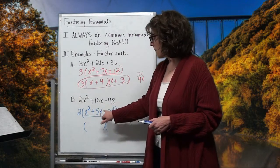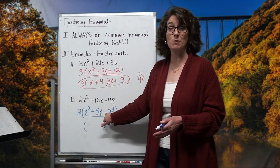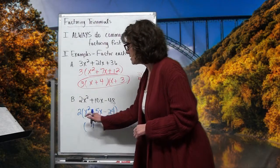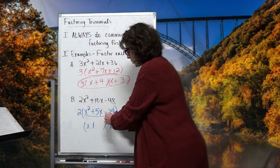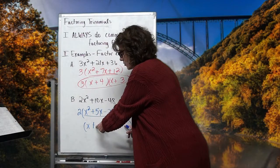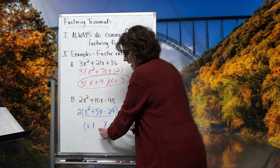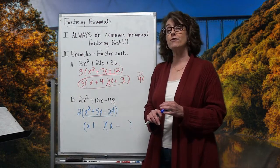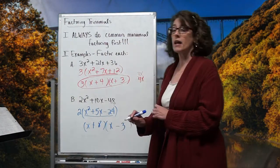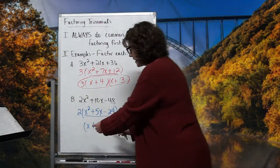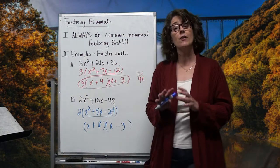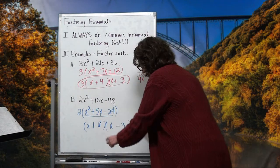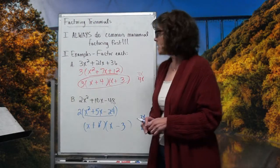I'm going to eliminate half my guesswork with the signs. The back sign is a minus, so my signs are going to be opposites — one plus, one minus. I split x squared into an x and an x in the front slots. I want two numbers that multiply for 24 and subtract for 5. That's 8 and 3. Out here I get a negative 3x and in here a positive 8x. Those combine to be a positive 5x, which is exactly what I wanted, so I don't have to switch the signs.